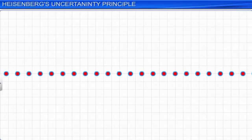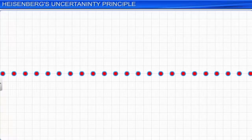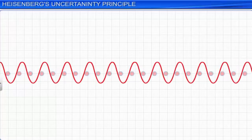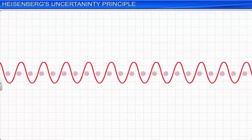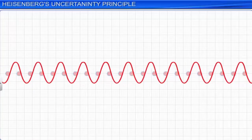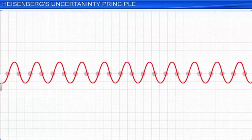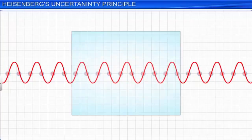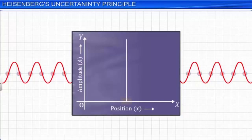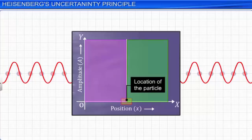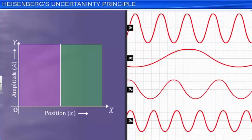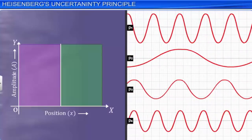According to De Broglie's dual nature theory, every moving particle — be it an electron, proton, etc. — is associated with a wave nature. Such waves are known as matter waves. For a particle moving in a one-dimensional space, say along the x-axis, the wave function can be represented by a sinusoidal function as shown. If the position of the particle is well defined — that is, its position can be known exactly — then its wave function is a sharply peaked function, where the amplitude a is represented on the y-axis. The wave function has zero amplitude everywhere else except at the location of the particle. Each wave function represents a component of different momentums for the particle along the x-axis.